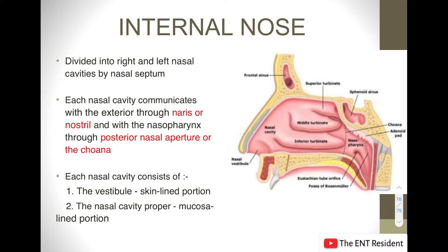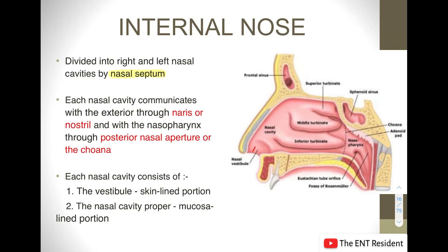Today's topic is the internal nose. We can divide it into the right and left nasal cavities with the help of the nasal septum, which is a midline structure. Each nasal cavity communicates with the exterior through the nares or nostril, and on the other hand communicates with the nasopharynx through the posterior nasal aperture, also known as the choana. These are the beginning and end of the nasal cavity.